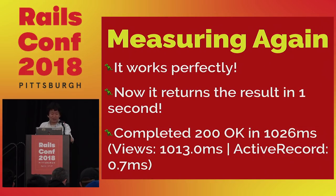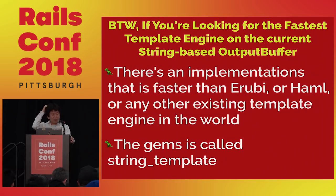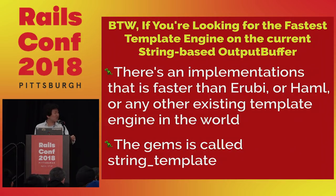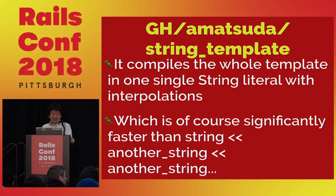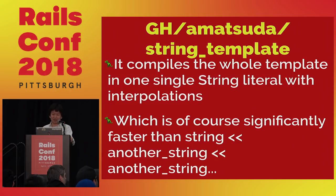Please note that real-world templates usually do more CPU-bound operations than just sleeping one second, so this is just a demonstration. By the way, if you're looking for the fastest template engine built on a string-based buffer, there's an implementation called string_template on my GitHub page. It compiles the whole template into one very long string literal with string interpolations, creating only one string instance per template — so it runs very fast, at least on some micro benchmarks.